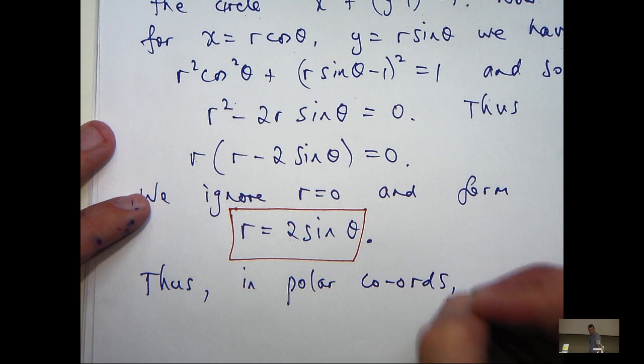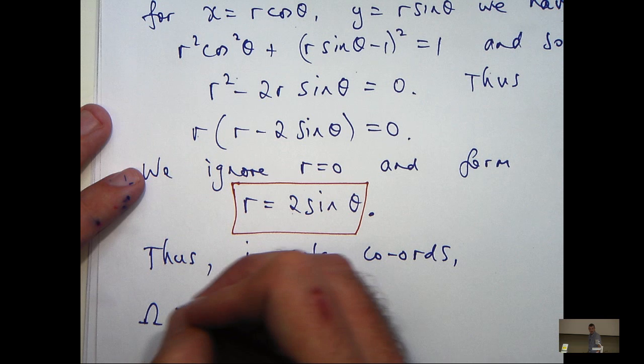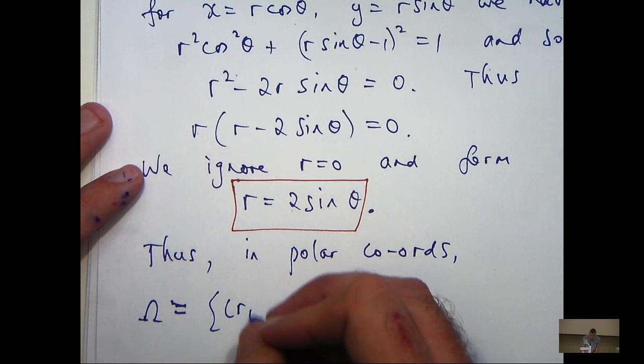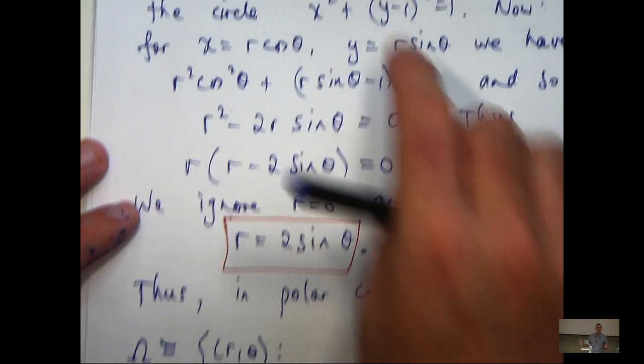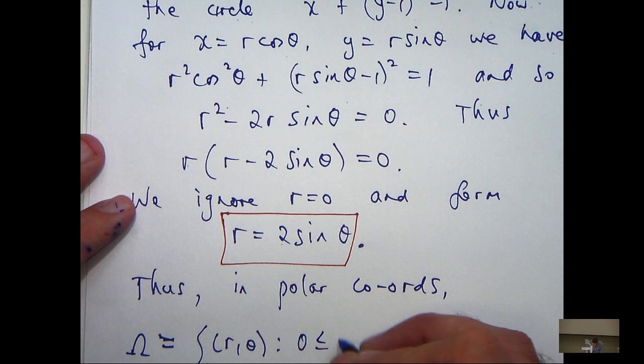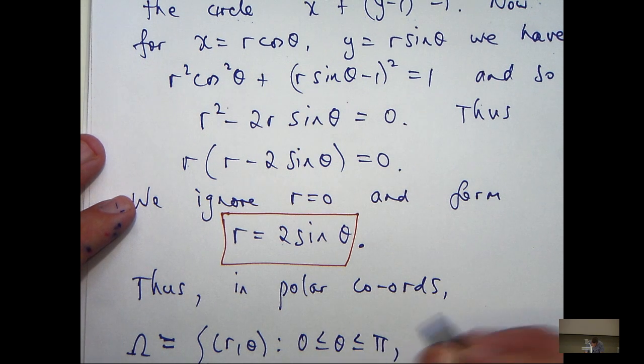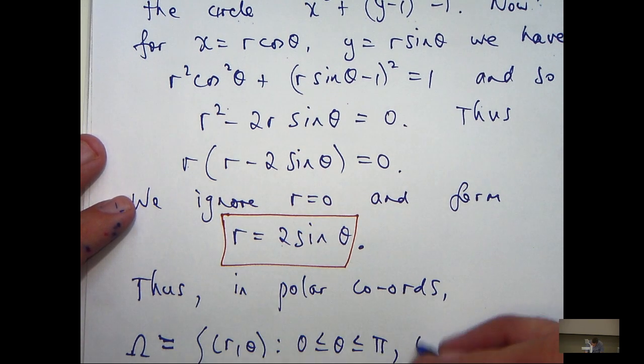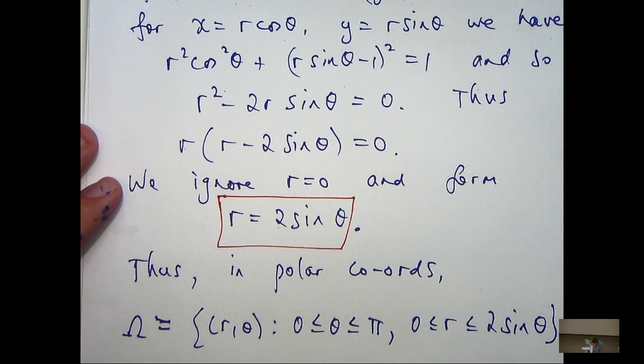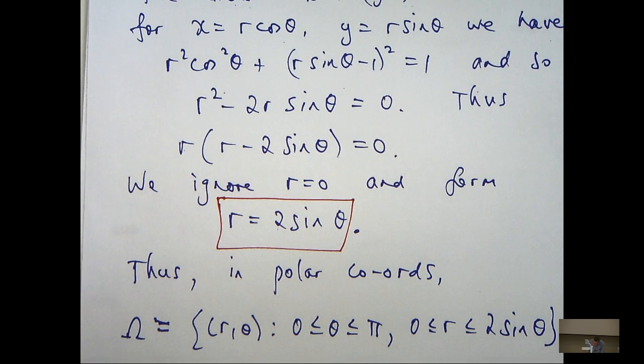So, in polar coordinates, omega is just the set where theta is between 0 and pi, and r is between 0 and 2 sine theta. So we spent a lot of time doing that, but we can now set our integral up.